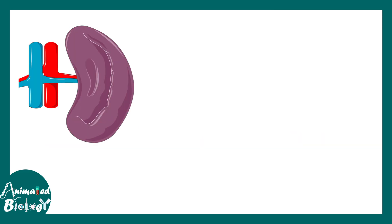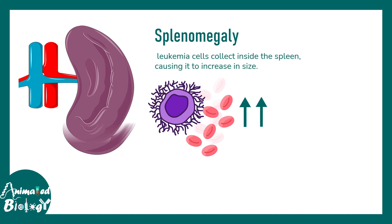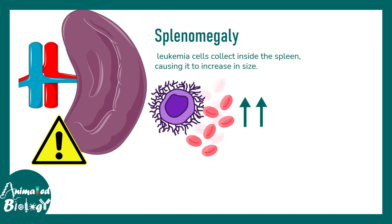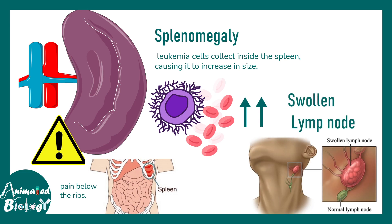Many of these immature hairy-like blood cells accumulate in the spleen, leading to its enlargement — known as splenomegaly. When the spleen is enlarged it pushes against the ribs, causing pain below the rib region. There can also be accumulation of hairy cells in lymph nodes, leading to swollen lymph nodes in the neck, groin region, and elsewhere.